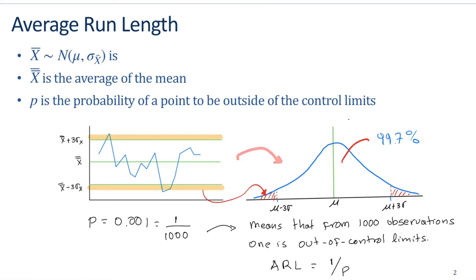The probability of being outside of the control limit is highlighted in these two tail regions. If we plot the normal distribution, we have mu, and the points mu minus three sigma and mu plus three sigma. The probability of being outside the control limits is highlighted in red, and from before we know that the area inside is equal to 99.7 percent.